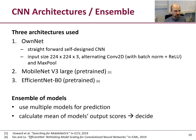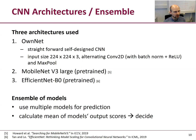In our approach we use three architectures. The first is called ownNet — a straightforward self-designed CNN using alternating convolution and max pooling layers. The second is MobileNet V3 Large, used with weights pre-trained on ImageNet and fine-tuned on the EmotioNet data. The third is EfficientNet, also initialized with pre-trained weights. We also evaluate an ensemble of models, where we use multiple models for prediction and calculate the mean of the models' output scores for the final decision.